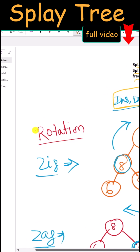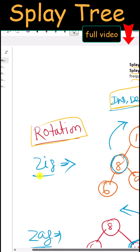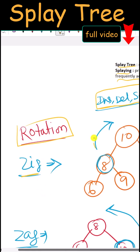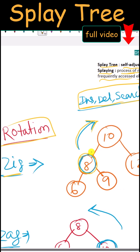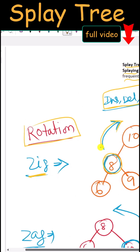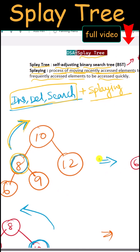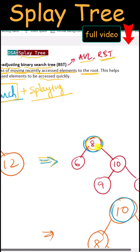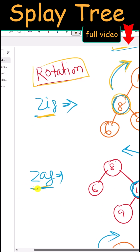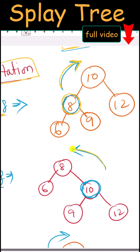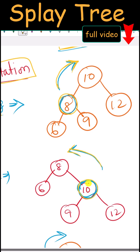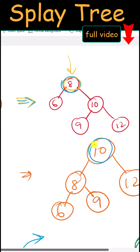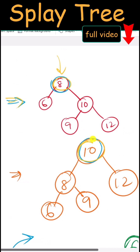To perform splaying we use rotations. We have the zig rotation, which is a right rotation — for example, if you are accessing element 8, we perform the zig rotation so that 8 becomes the root node, allowing frequent access to be very quick. Similarly, we have the zag rotation, which is a left rotation — if you are trying to access element 10, we perform one zag rotation so that element 10 becomes the root node.